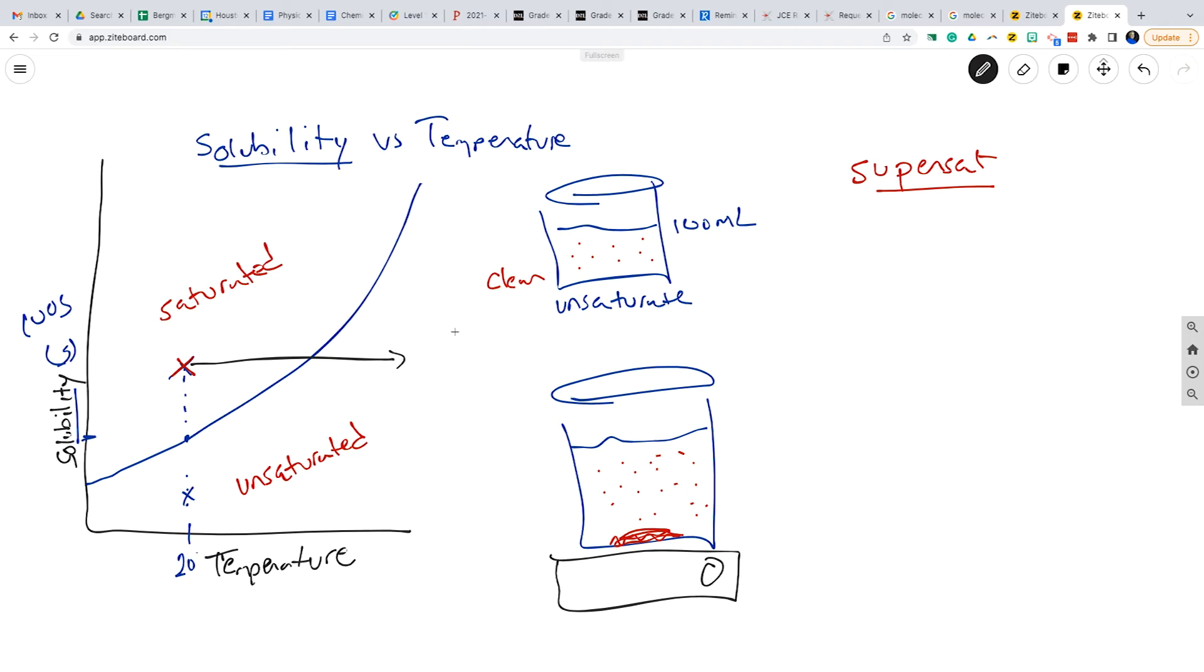And then if you carefully take it off of the hot plate, don't bump it, and just let it sit, assuming the flask or the beaker or whatever is super clean, it'll return back to this state right here. But it will then be a clear solution.